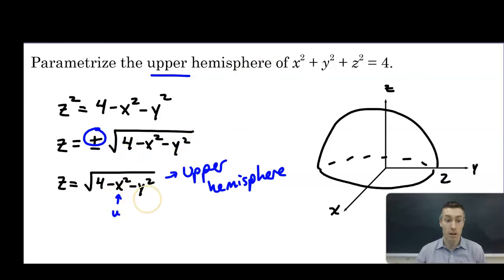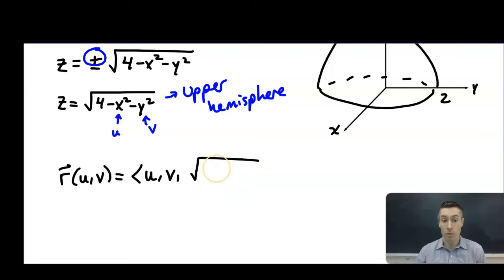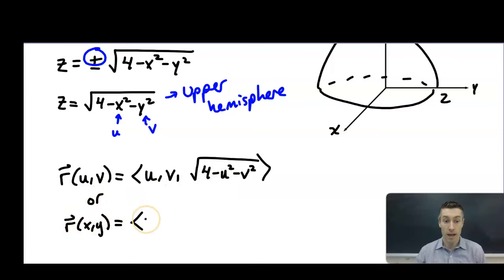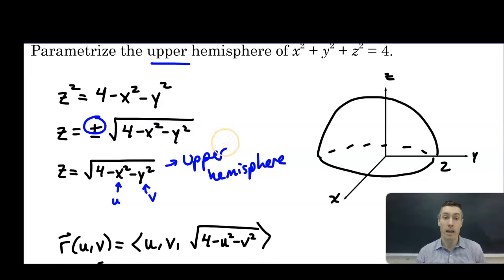Now that we have z equals the square root of 4 minus x squared minus y squared for the upper hemisphere, we can create a trivial parameterization. Letting x be u and y be v: r of u, v equals u, v, square root of 4 minus u squared minus v squared. Or keeping it in terms of x and y: x stays x, y stays y, and z is the square root of 4 minus x squared minus y squared.